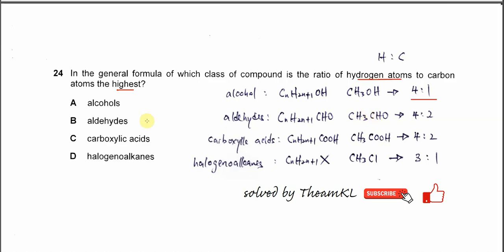And after that, carboxylic acid. It's CnH2n+1COOH. Let's use ethanoic acid. The ratio between the hydrogens and carbon is also 4 to 2, which means it's actually 2 to 1. So both are 2 to 1 ratio, the simplest one.